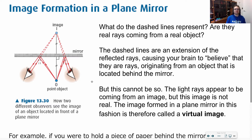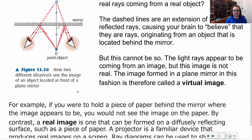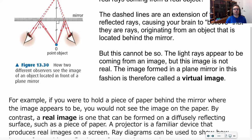Our brains start believing that the image is behind the mirror. Since the object is here but we think the object is way up there, we are seeing something called a virtual image, because it's on the other side of the plane. If the image of my object is on the same side of the plane as my object, that is going to be called a real image. Projectors are a good example of a real image.